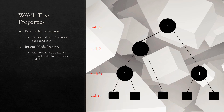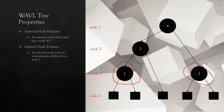The next Waffle Tree property is the internal node property, which states that any internal node with two external node children has a rank of one. In a Waffle Tree with four internal nodes — nodes with keys four, two, one, and five — the internal nodes are non-leaf nodes with left and right pointers to children. The internal node property refers specifically to internal nodes that have two external node children. The nodes with keys one and five both have left and right children that are external nodes, so the internal node property states that these nodes always have a rank of one.